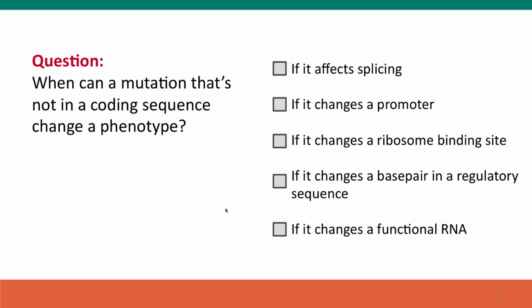Here's a summary question: when can a mutation that's not in a coding sequence change the phenotype? Note that these are checkboxes, meaning you can choose more than one answer if more than one is correct.